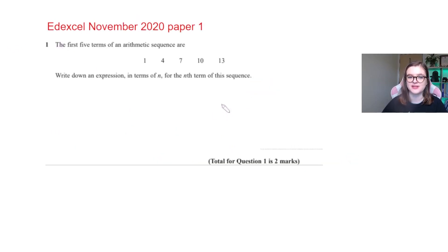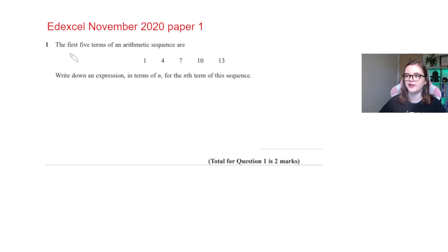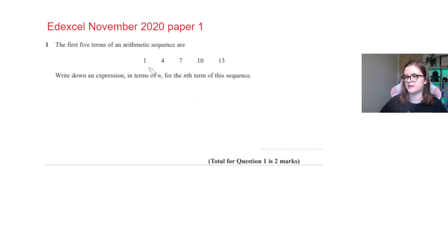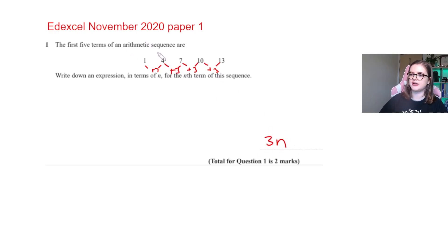Now an Edexcel question — November 2020, Paper 1. The first five terms of an arithmetic sequence are 1, 4, 7, 10, and 13. Write an expression in terms of n for the nth term. All differences are plus 3 — from 1 to 4, 4 to 7, 7 to 10, 10 to 13 — so that's 3n. Then 3 to 1 is minus 2. Answer: 3n − 2. Easy peasy.